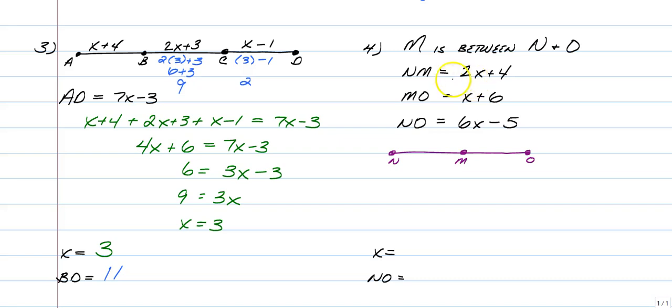So if NM is 2X plus 4 and MO is X plus 6 and the whole thing from N to O is 6X minus 5, the equation you should have used would have been 2X plus 4 plus X plus 6 equals 6X minus 5. And once we combine our like terms on the left, we would have 3X plus 10 is equal to 6X minus 5. And again, now we're going to solve any way you want to solve. So I'm just going to say that negative 3X is equal to a negative 15 and X is equal to 5. See, it didn't matter. If you would have brought your X to the other side, it doesn't matter. We're going to get 5.